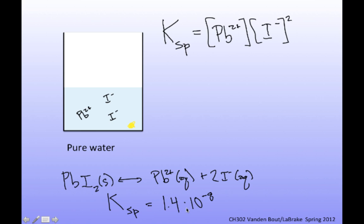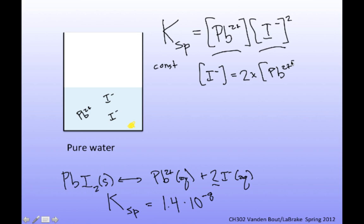At equilibrium, the product of the lead ion concentration and the iodide ion concentration squared equals a constant. The question becomes: what are those concentrations? I know there's a relationship between them — I get two moles of iodide for every one mole of lead. So the iodide concentration is equal to two times the lead ion concentration. If I let the lead ion concentration equal X, I can set up an algebraic expression for Ksp.